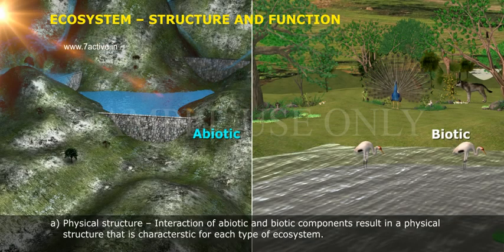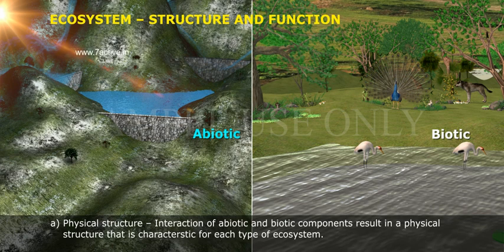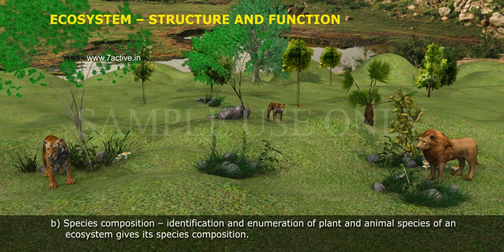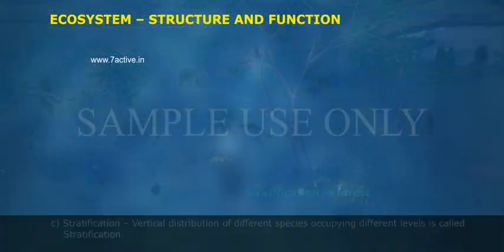They are: A. Physical structure — interaction of abiotic and biotic components results in a physical structure characteristic for each type of ecosystem. B. Species composition — identification and enumeration of plant and animal species of an ecosystem gives its species composition.